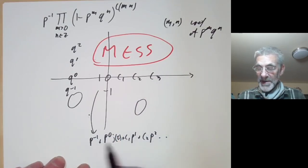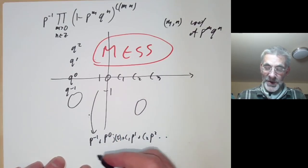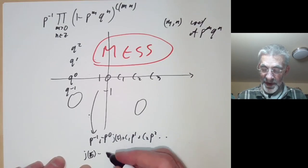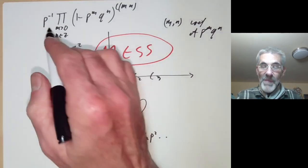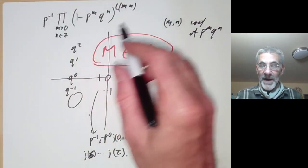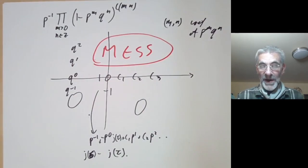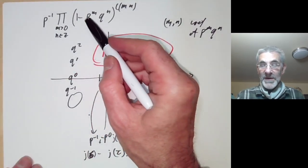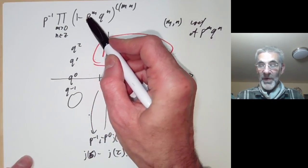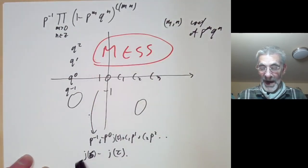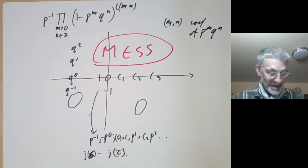So the sum is very easy — it just turns out to be j(σ) - j(τ). We've magically worked out this incredibly complicated-looking infinite product just by observing that the coefficient of p^m for any m is a modular function. Using Hecke operators allows us to identify it explicitly.